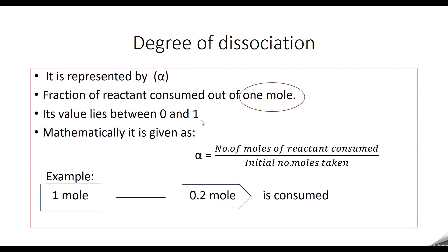The value of alpha lies between 0 and 1. If it is 0, only the reactant is present and no reactant has been consumed. If the value is in between — such as 0.1, 0.2, 0.3, or 0.001 — it must be a positive value, never negative. If it is 1, that means all the reactant has been consumed and only product will be present.